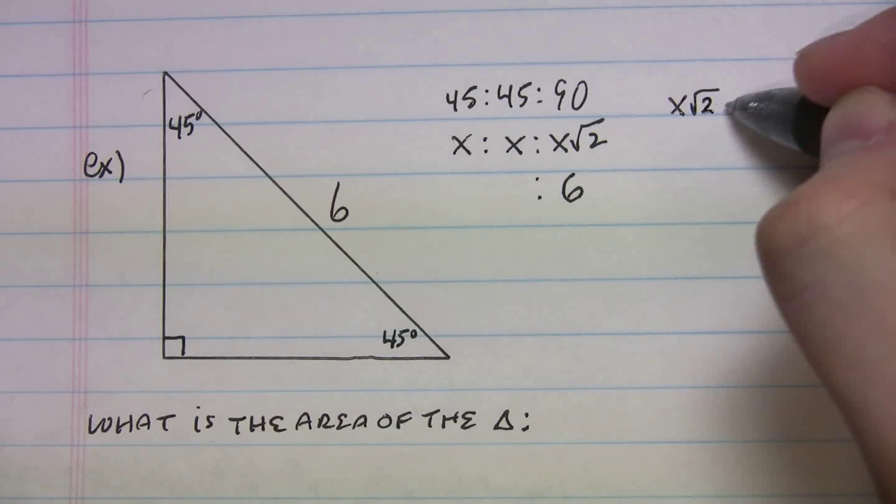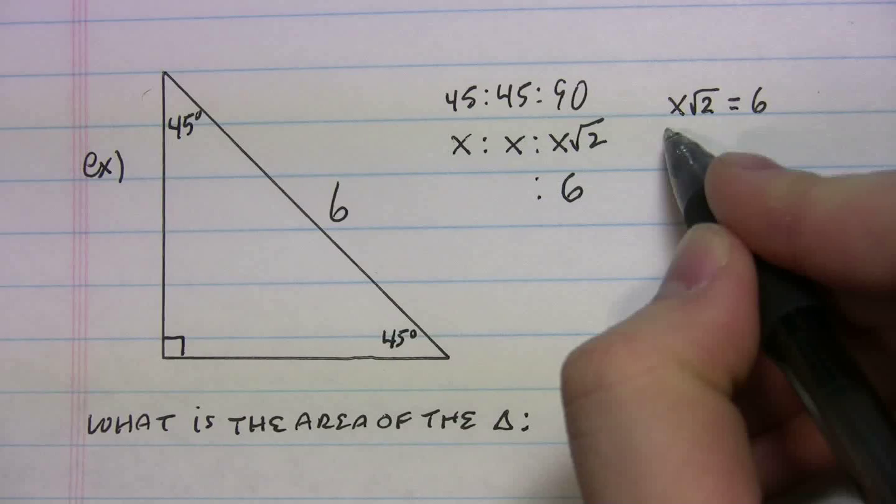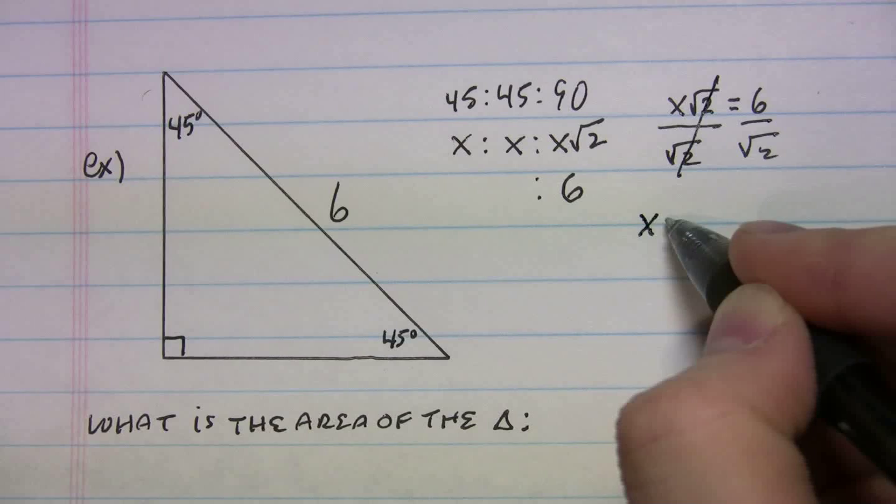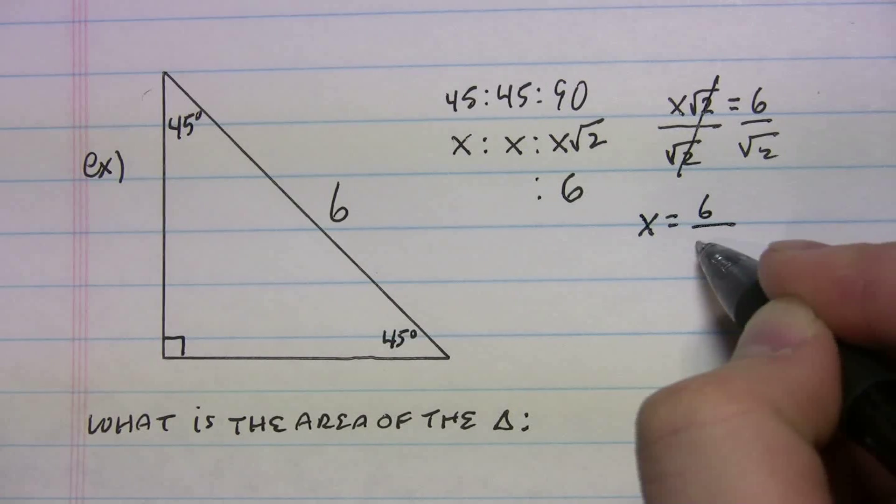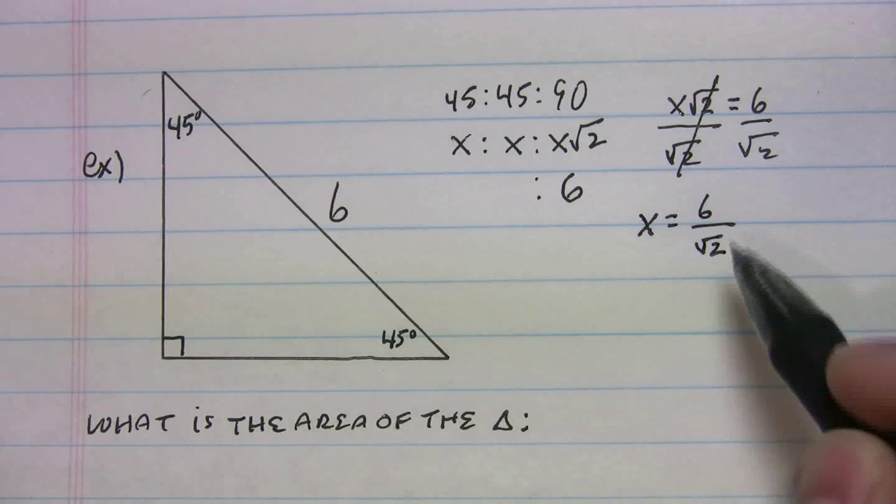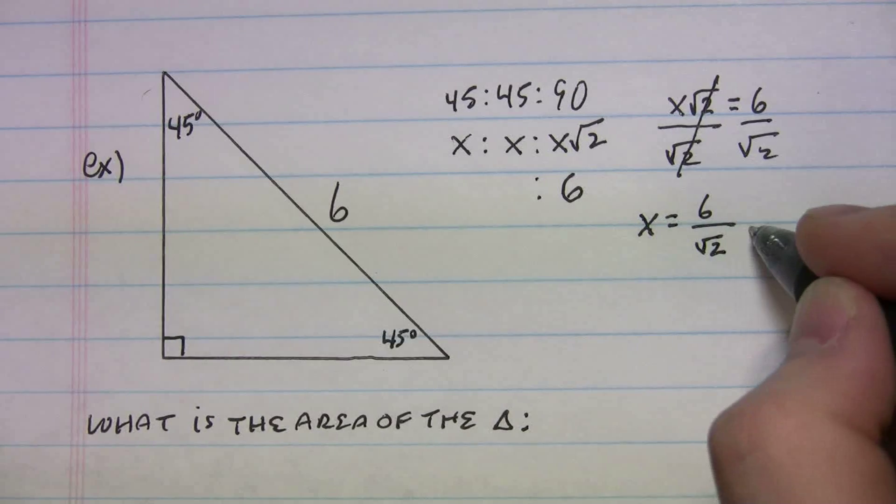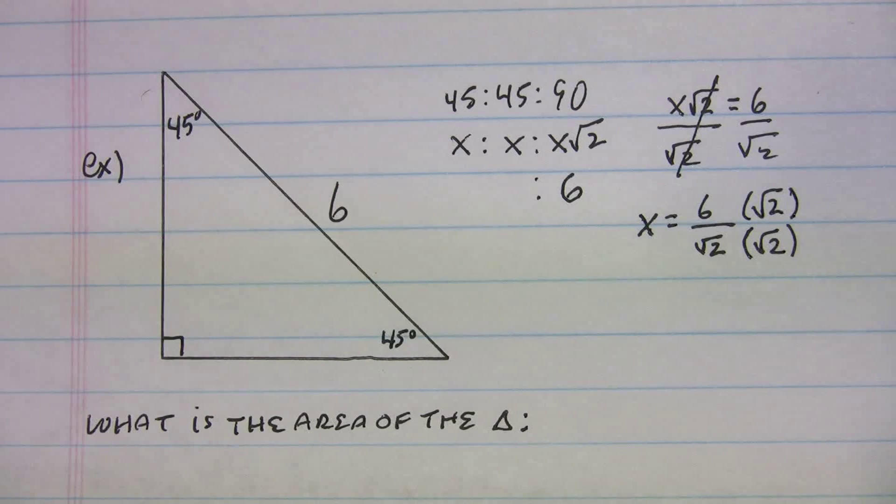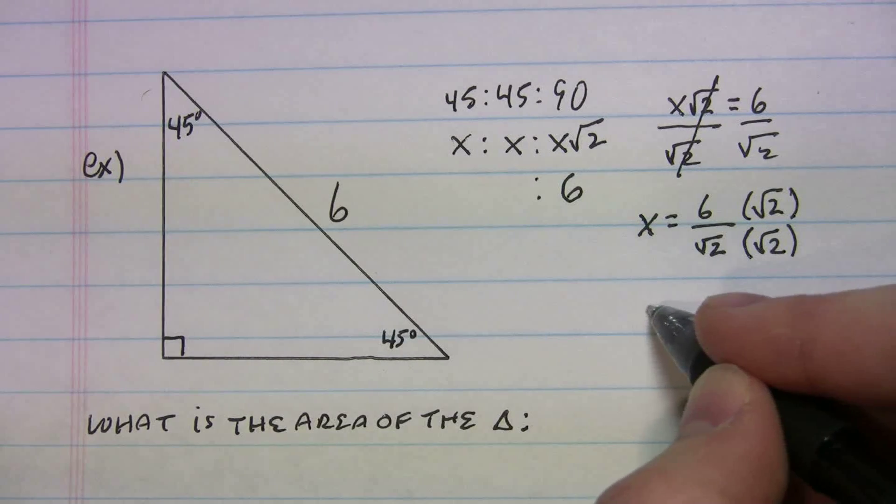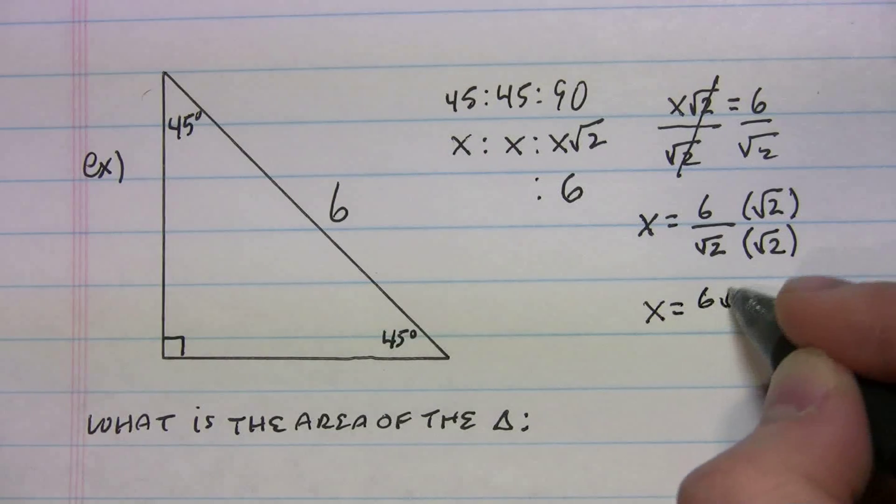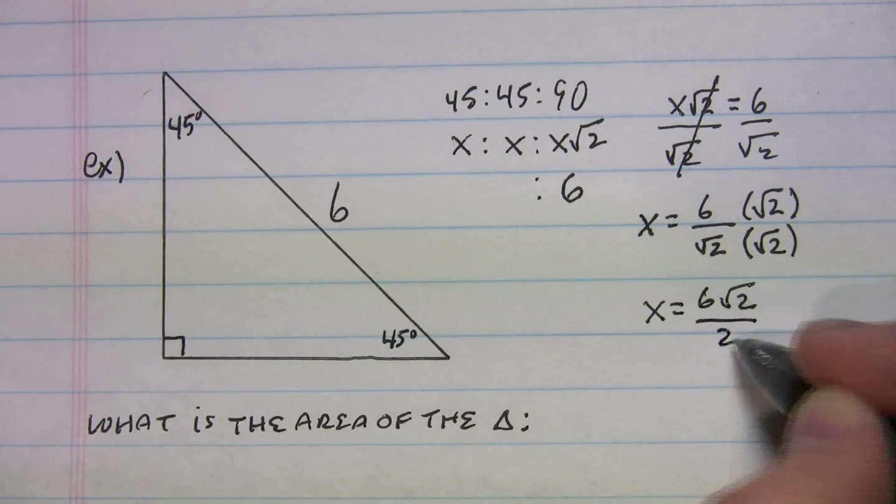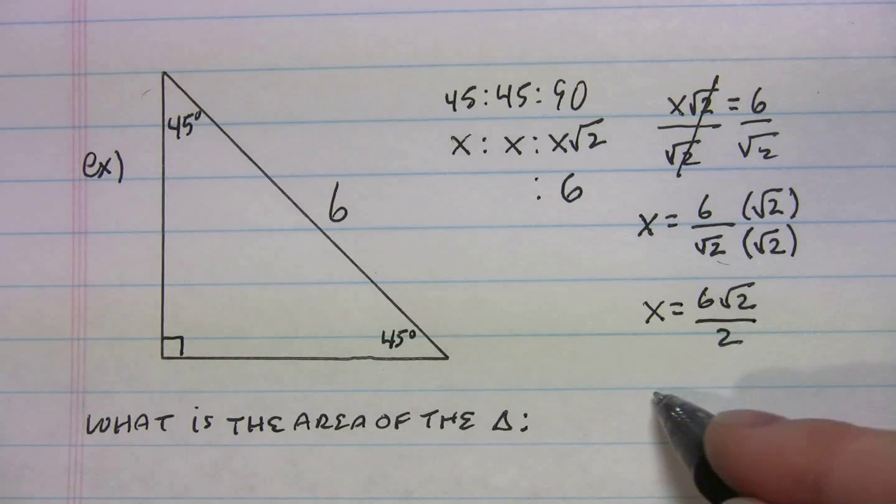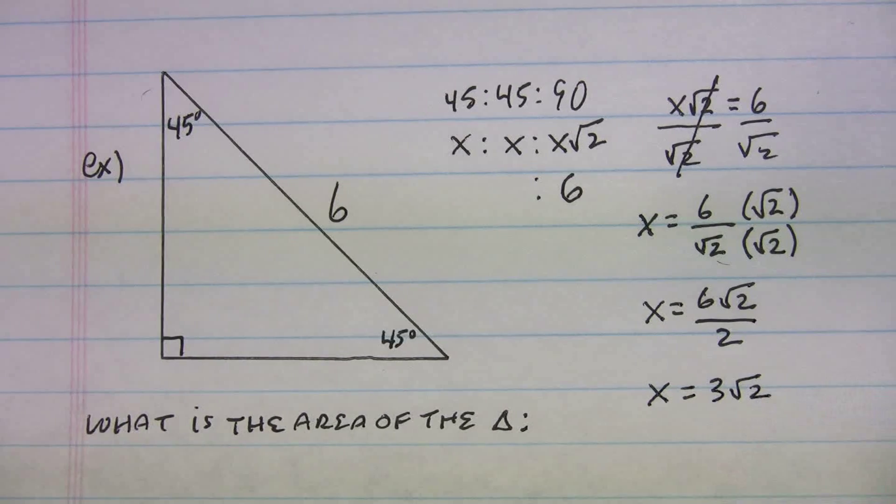So we can write a little equation here. X radical 2 equals 6. Divide both sides by radical 2. That crosses out. And we get X equals 6 over radical 2. We can never leave radical 2 in the denominator. We want to rationalize. So that's going to be radical 2 over radical 2. We multiply across. We get X equals 6 radical 2 over 2. We're just multiplying across. 6 divided by 2 is 3. So we get X equals 3 radical 2.